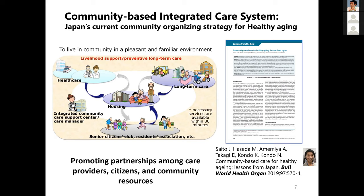More than 30 municipalities have joined JAGES so far. Community-based integrated care system is Japan's current strategy to achieve healthy longevity. Many older adults require multiple types of care — not only medical care, but long-term care, social care, and community care that provides opportunities to maintain participation in the community — and these services should be provided in an integrated manner. You may notice that this concept of community-based integrated care is similar to the concept of community organizing.